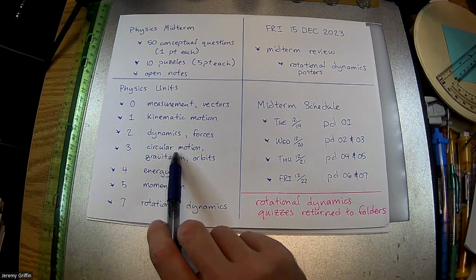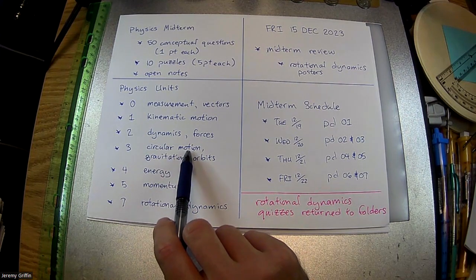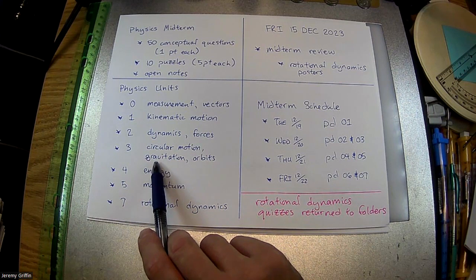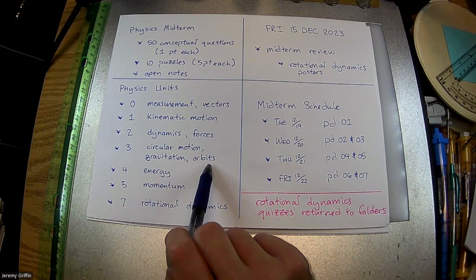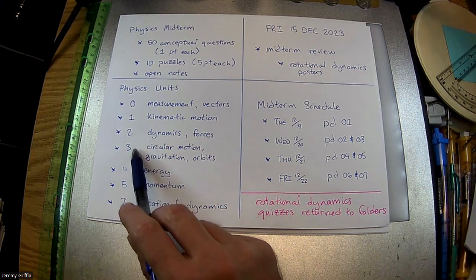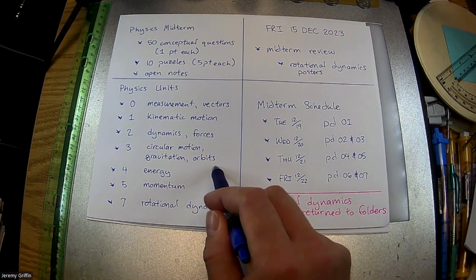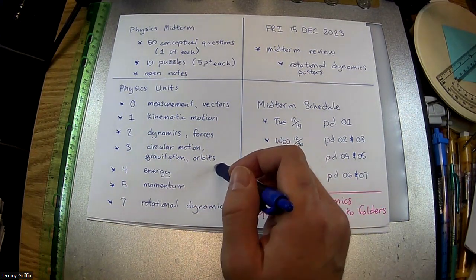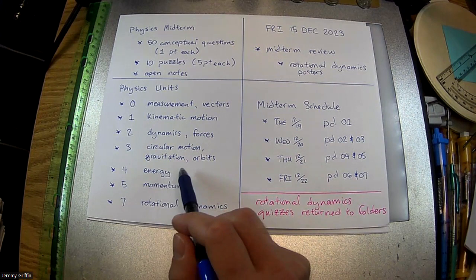Then unit three, we had circular motion that involves centripetal force to keep something on a curved path. We brought in gravitation. We made orbits out of that. I introduced you guys to rotational kinematics at that point. Also, rotational velocity.